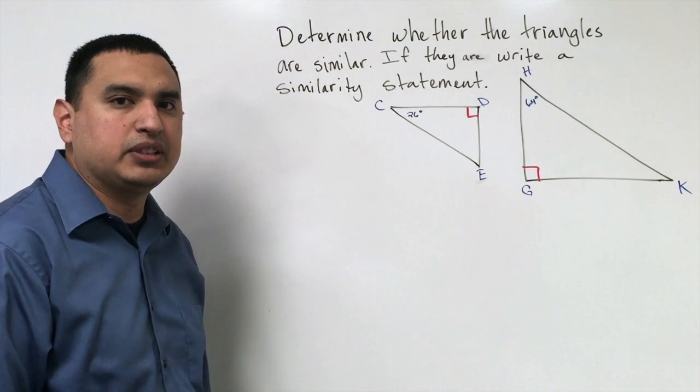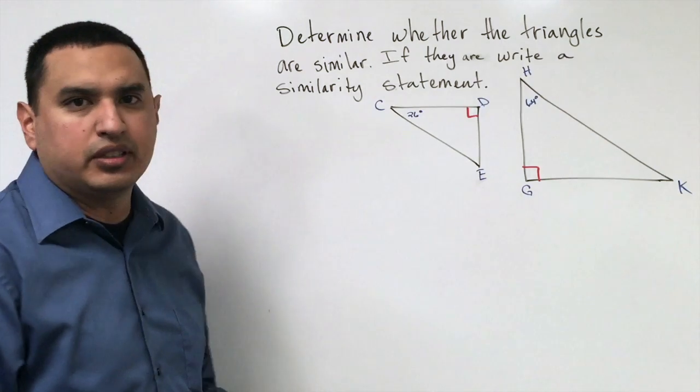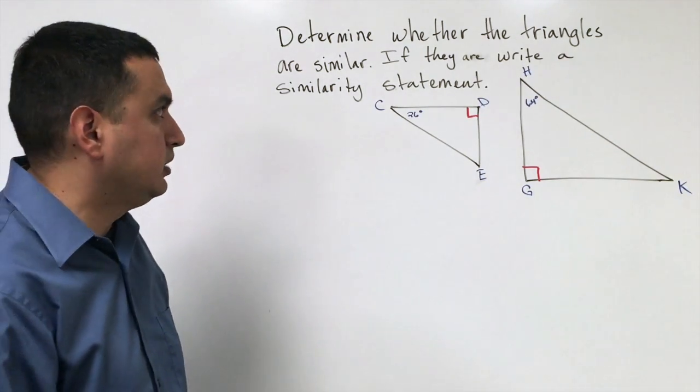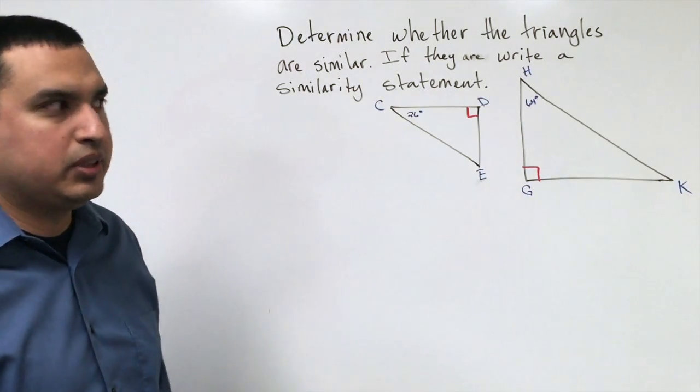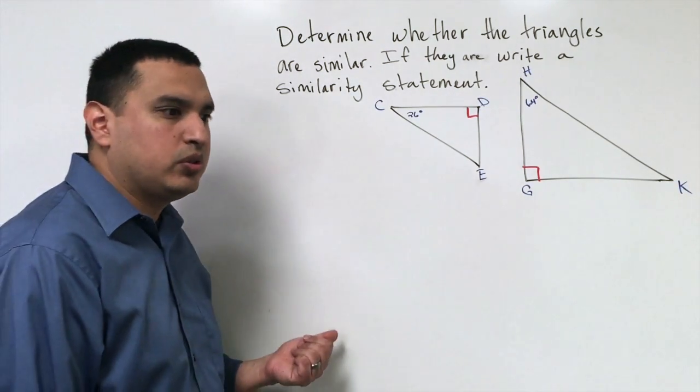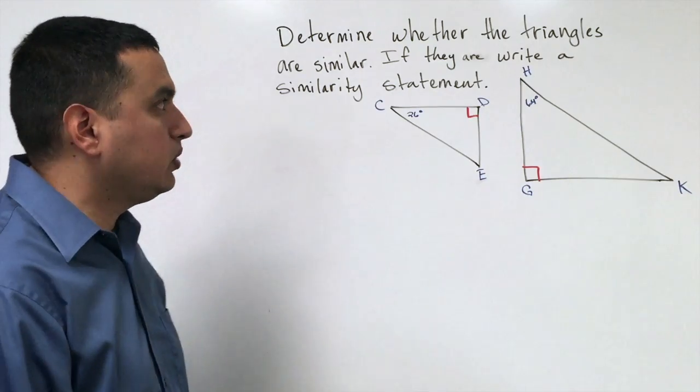In the previous lesson, we talked about how to determine if polygons were similar, what that meant. So just as a quick review, to determine if polygons are similar, the corresponding sides had to be proportional, and the corresponding angles had to be congruent.